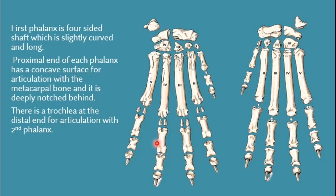The second phalanx is shorter than the first phalanx and is about two-thirds the length of the first phalanx. Proximally, the second phalanx contains an articular surface with two cavities separated by a sagittal ridge, while the distal aspect of the second phalanx is comparatively wider. Between the distal and proximal aspects there is a short body of the second phalanx.